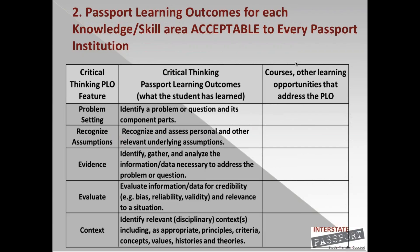Here is an example from critical thinking. We began with three big categories: the feature column on the far left — a broad one or two word descriptor — the learning outcome, and the proficiency criteria. For critical thinking, the features were problem setting, recognizing assumptions, evidence, evaluation, and context. For example, the problem setting learning outcome is to identify a problem or question and its component parts; the evidence learning outcome is to identify, gather, and analyze the information and data necessary to address the problem or question. The learning outcomes are what each of the nine areas must reach in order to gain a passport.